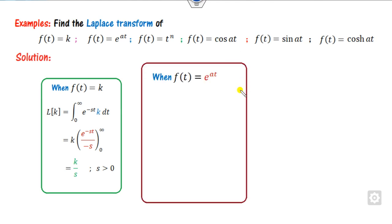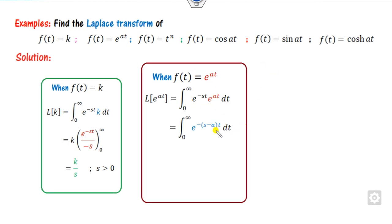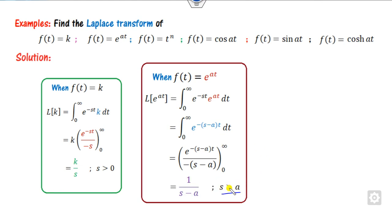The second example is finding the Laplace transformation of the exponential part. Again starting from the definition, the bases are the same so we can add the exponents and integrate. Substituting s gives 0 provided s minus a is positive — that is the condition. So whenever someone asks for the Laplace transformation of e^(at), you can write it directly as 1/(s minus a), where a is your constant, for example 1/(s minus 3) when a is 3.